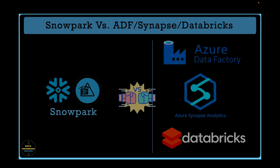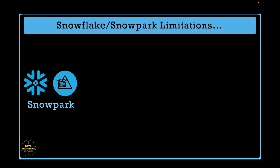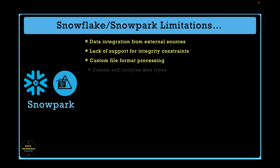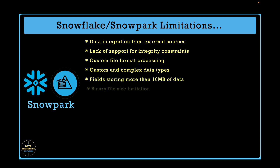There are several important features currently not available in Snowflake, which also means they cannot be accomplished using Snowpark. These include: inability to integrate data directly from external sources like RDBMS or API services; no support for integrity constraints such as primary keys and foreign keys; limited custom file format processing; limited handling of custom and complex data types compared to Apache Spark; a field size restriction of 16 MB per field; and a binary file size limit of 8 MB.